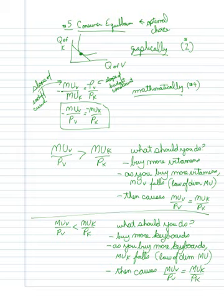Why are we buying more of the product? Because if I had an extra dollar, I clearly would get more marginal utility or happiness from every dollar I additionally spent on vitamins or from keyboards.